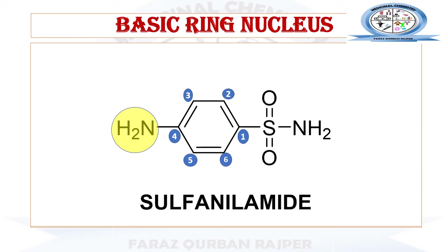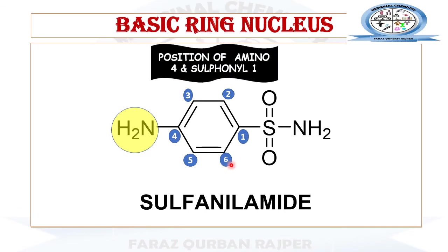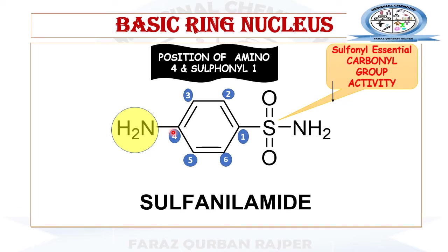Let's start the sulfonamide class drug SAR by considering sulfanilamide as an example. The numbering in every sulfonamide starts from the sulfonyl group — positions one through six — with the sulfonyl group at position one and the amino group at the para (fourth) position. Both functional groups are essential for the activity of the sulfonamide class.